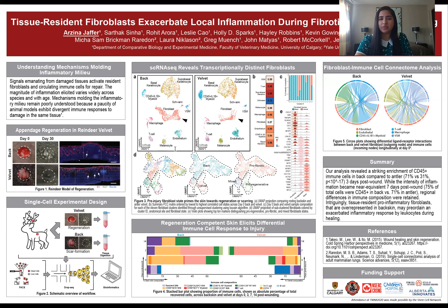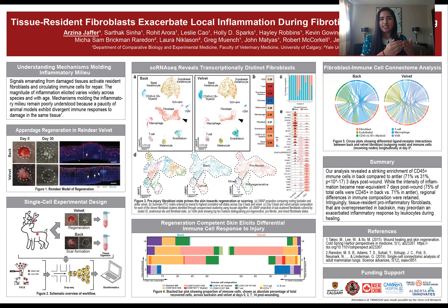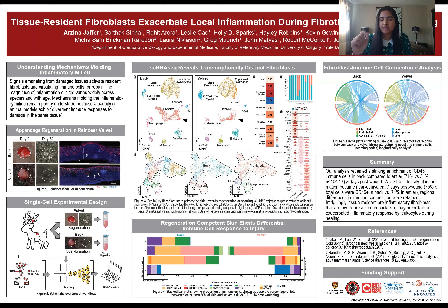The first thing we did was look at the day 0 samples, because perhaps there was something present in the back skin or the velvet skin that was already in the uninjured skin that preferentially primes it to either regenerate or to form a scar. And this is what we found. If you look at these UMAP projections, every single dot represents a single cell, and as you can see in the back, there are a far greater number of fibroblasts present compared to the antler.